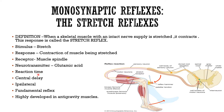Stretch reflex involves reaction time — the time between the application of the stimulus and the response. For the knee jerk stretch reflex, it is 19 to 24 milliseconds. The central delay — the time taken for reflex activity to traverse the spinal cord — is 0.6 to 0.9 milliseconds for the knee jerk, and 0.5 milliseconds for a single synapse. All monosynaptic reflexes are ipsilateral. They are highly developed in anti-gravity muscles like the extensor group of the legs, flexor group of the arms, and back muscles.